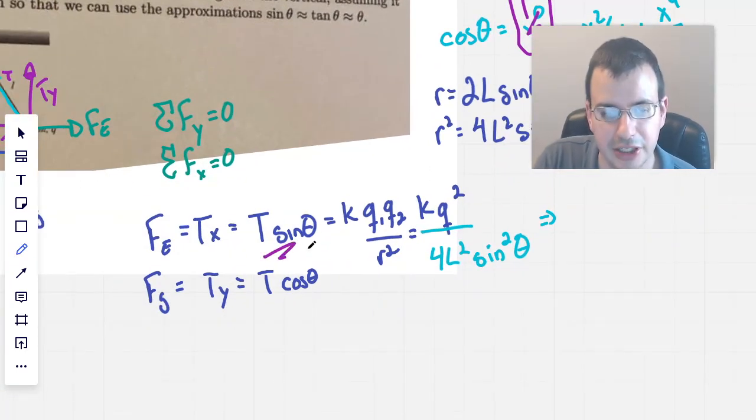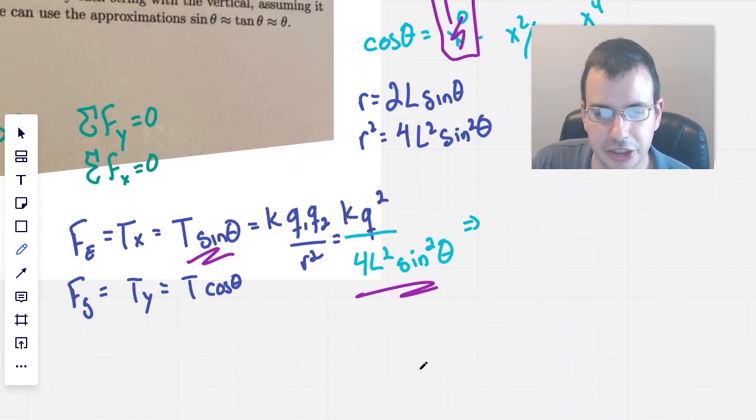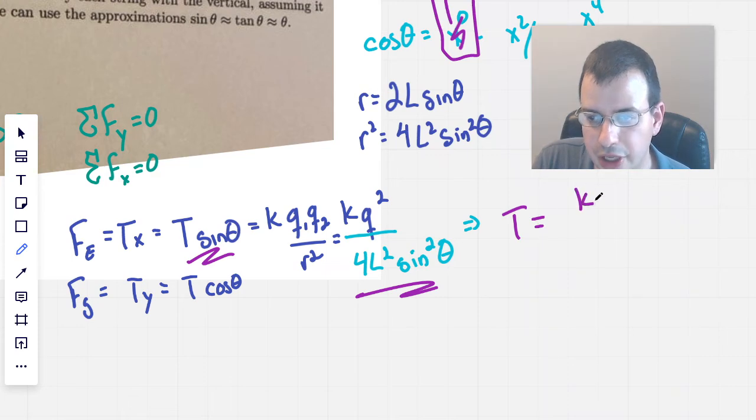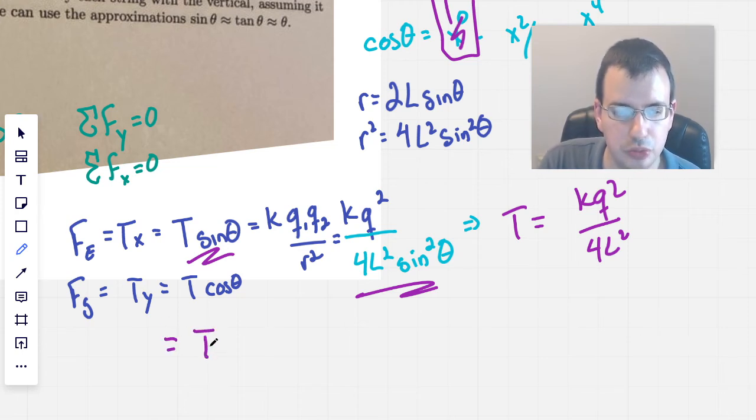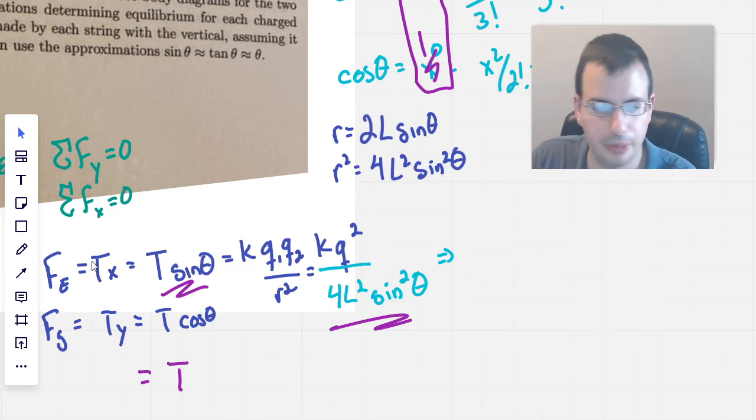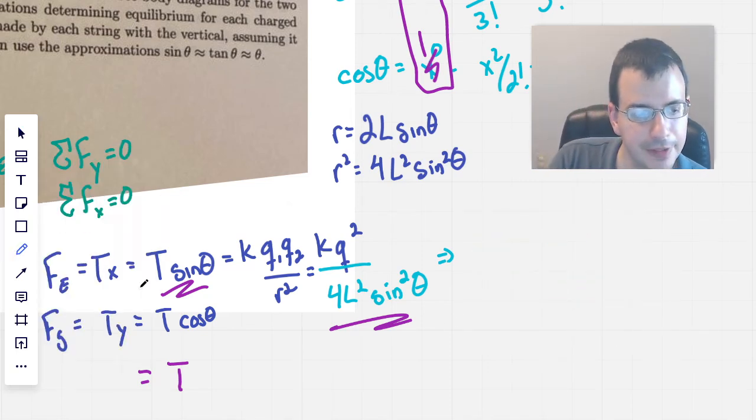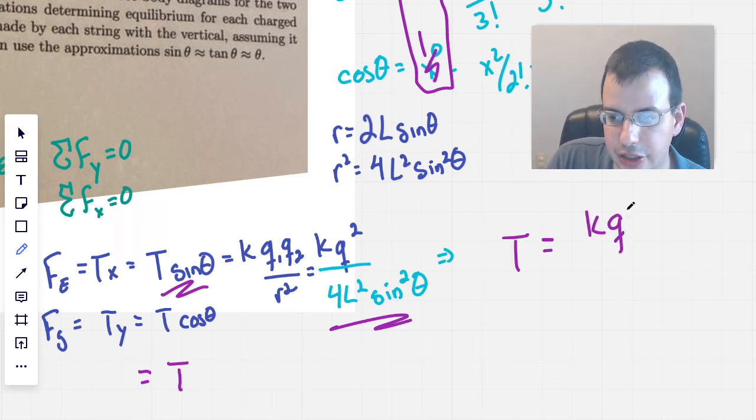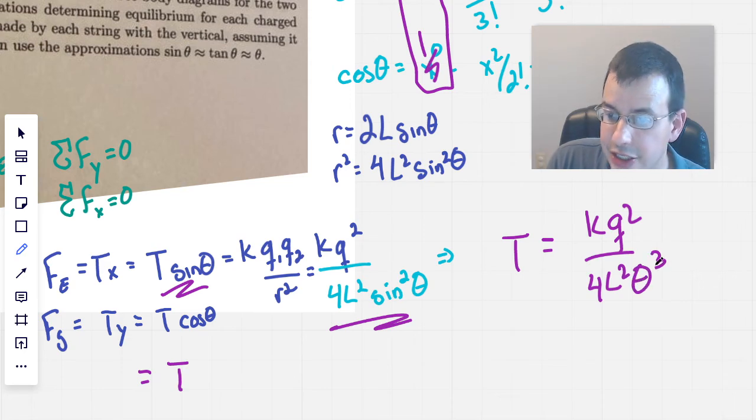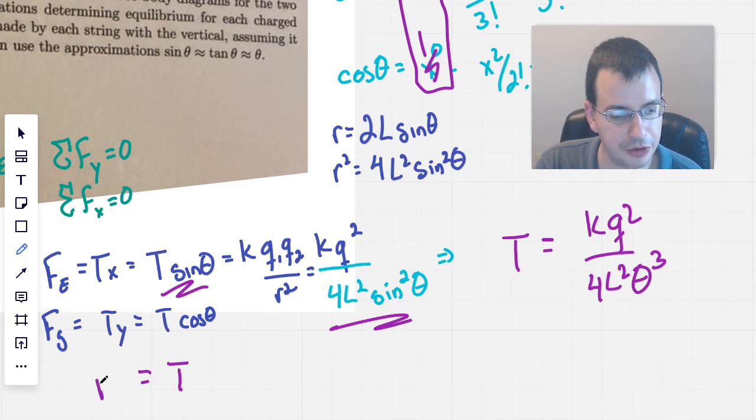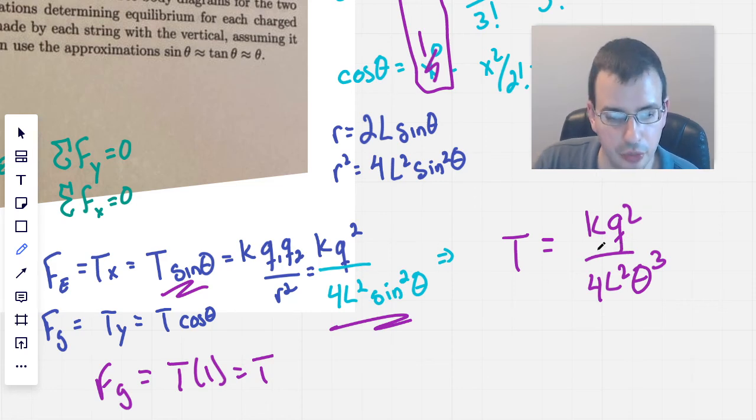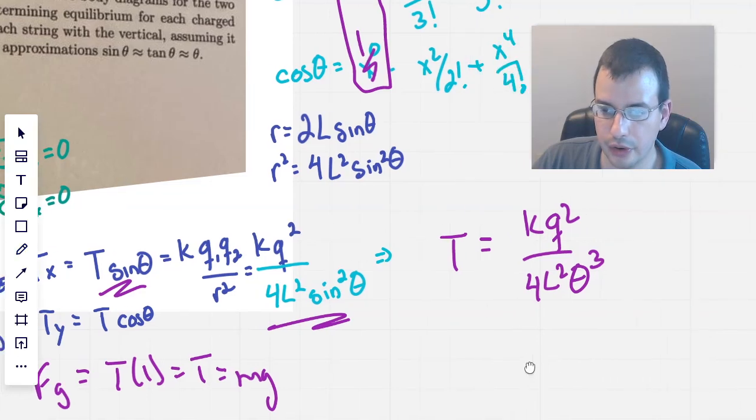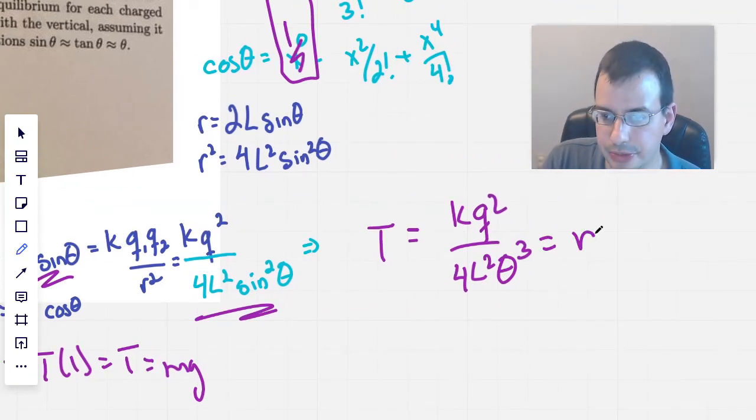Alright, so looking back here, we have T sine theta, and so we have tension equals kq squared over 4l squared. Wait a second, I should have left in thetas there. Good catch. So this would be tension equals kq squared over 4L squared theta cubed, because that is the theta over there. And over here, force of gravity equals tension times 1, which is just tension. So, which will be, force of gravity will be mass times gravity. And so we have equals mass times gravity.